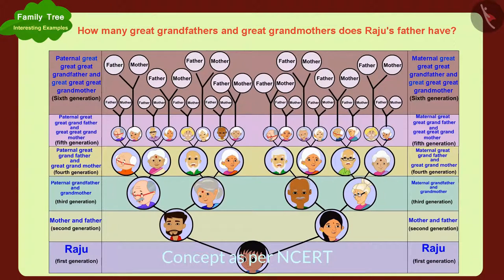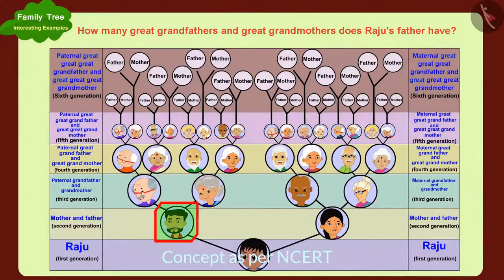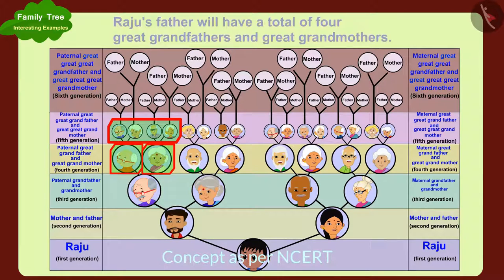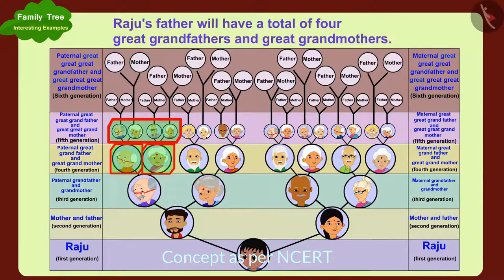Can you find the answer to Raju's question? Raju's father's paternal great-grandfather and great-grandmother will be Raju's father's paternal grandfather's and grandmother's parents. In this way, Raju's father will have a total of four great-grandfathers and great-grandmothers.